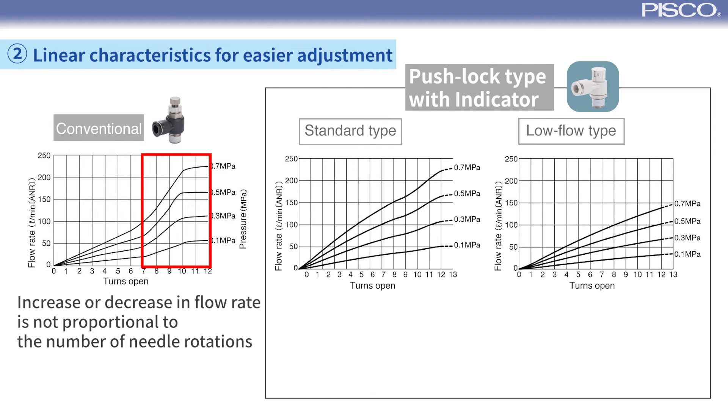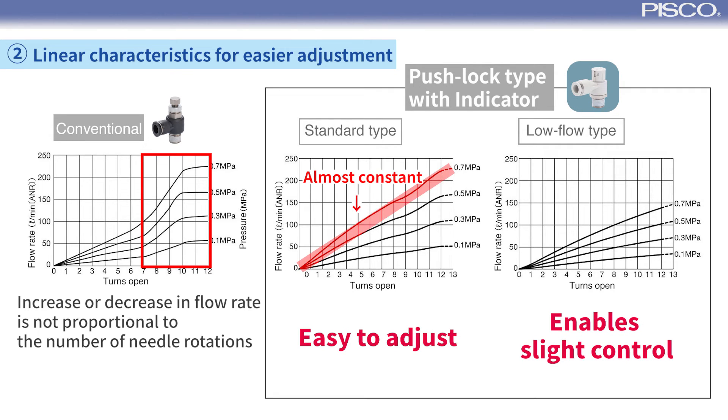With the indicator type, however, it's easy to adjust the cylinder speed because the increase or decrease in flow rate in response to the number of needle rotations is almost constant.